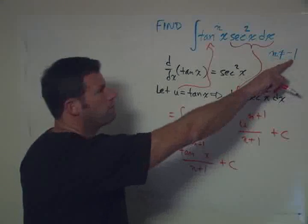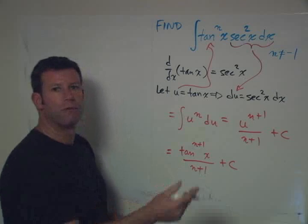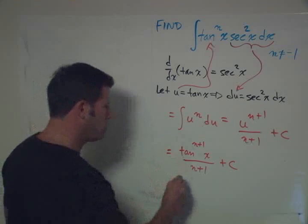Now we can see why n cannot be minus 1. Because if that were true, we'd end up with division by 0. We would have no integral. So there's the final answer.